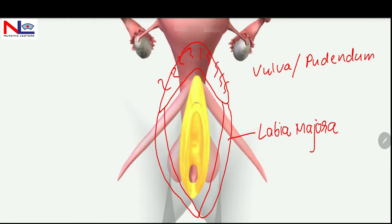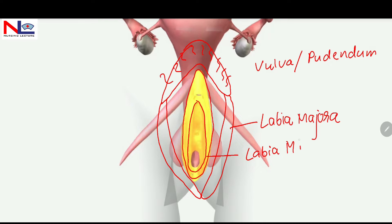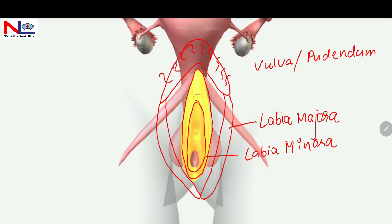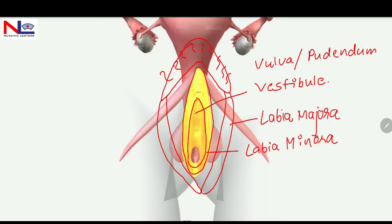Internal to labia majora are two thin folds of skin devoid of fat, known as labia minora. Internal to this is a triangular cleft space known as the vestibule. It consists of many openings to the exterior, and there is a small cylindrical erectile tissue similar to the penis, known as the clitoris.